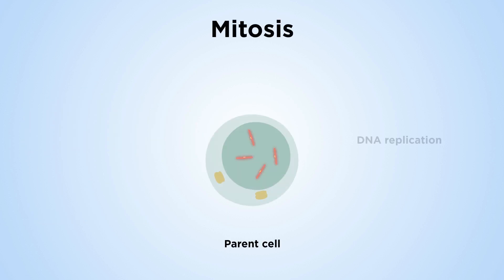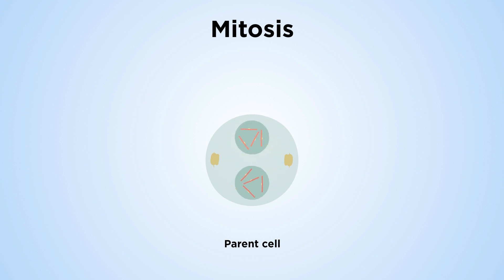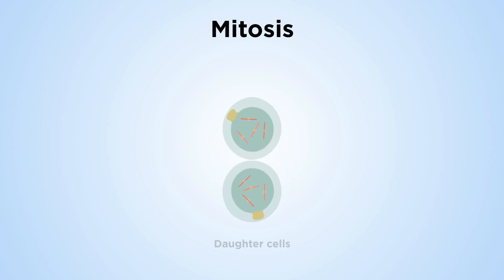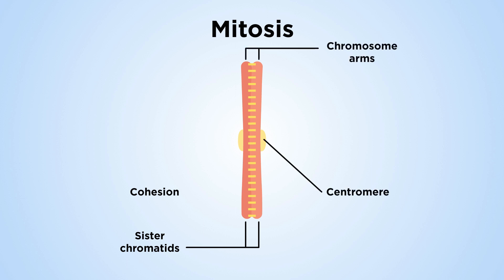Mitosis results in two daughter cells that each has the same number and kind of chromosomes as the parent nucleus. This is typical of ordinary tissue growth and repair. In a mitosis chromosome, cohesion exists along the entire length of the chromosome, between centromeres and along chromosome arms.